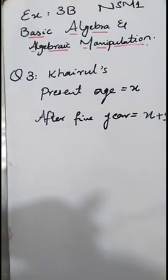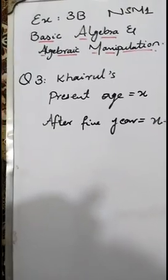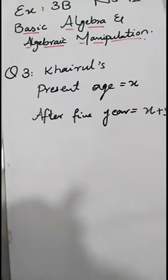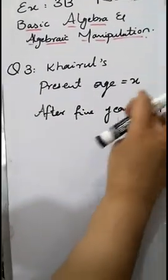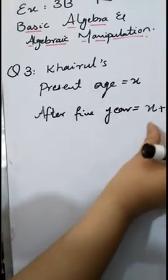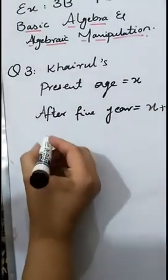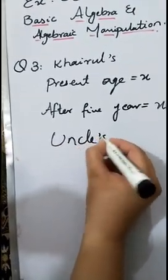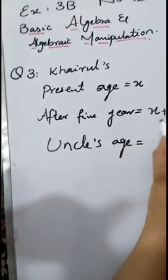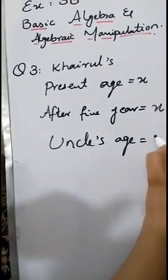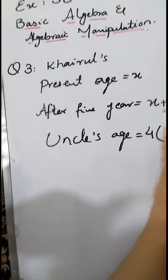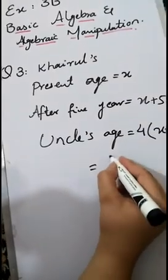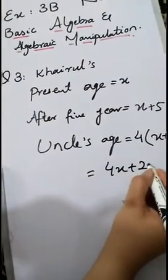Find the present age of Harold's uncle. Harold's uncle is 4 times as old as Harold will be in 5 years. The age that Harold will be in 5 years is x plus 5, so his uncle's present age is 4 times this age. Uncle's age equals 4 times Harold's age after 5 years, so 4 times (x plus 5). After expanding, his uncle's age will be 4x plus 20 years.